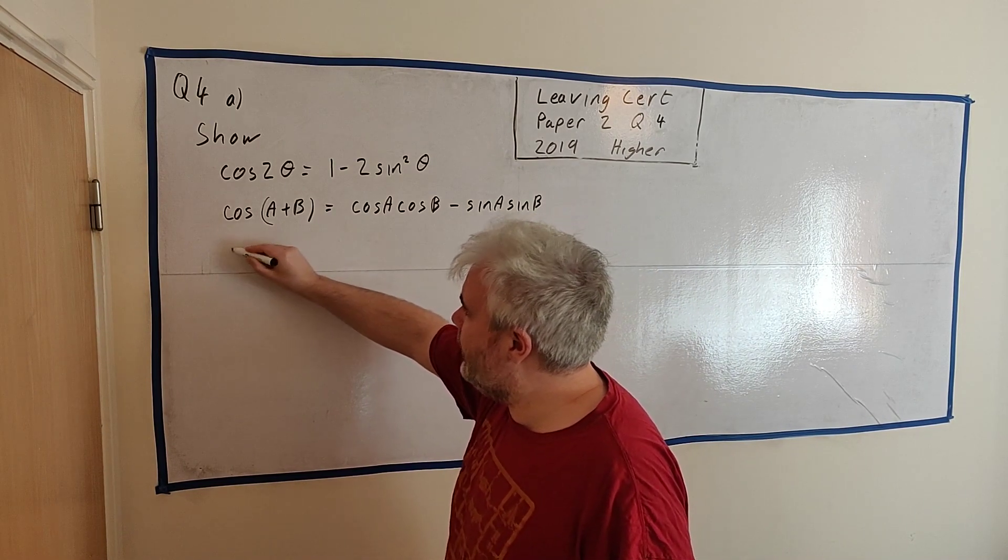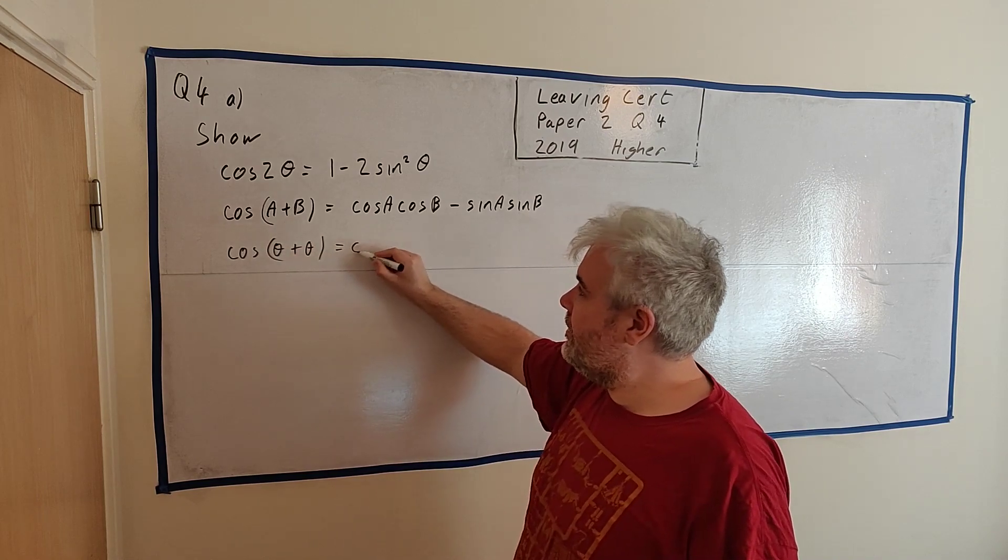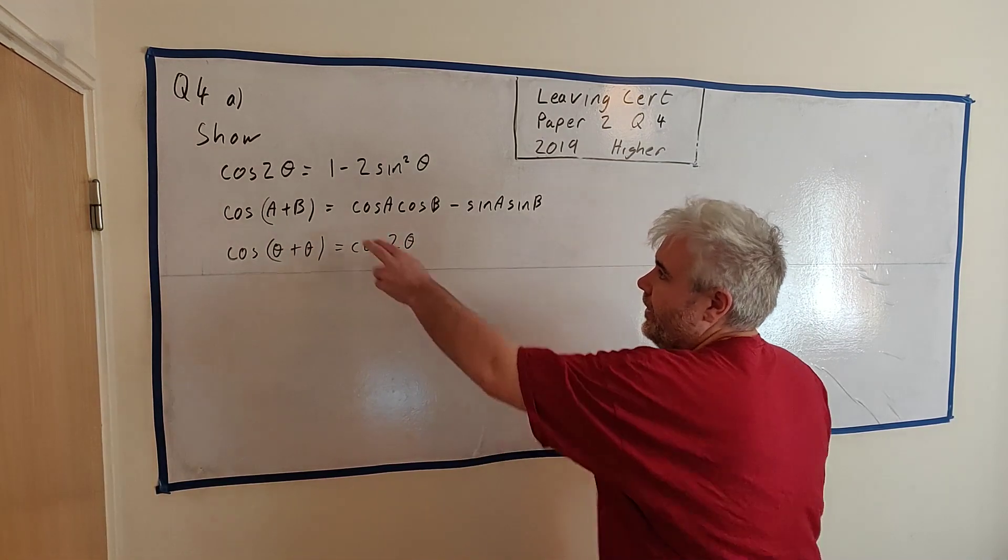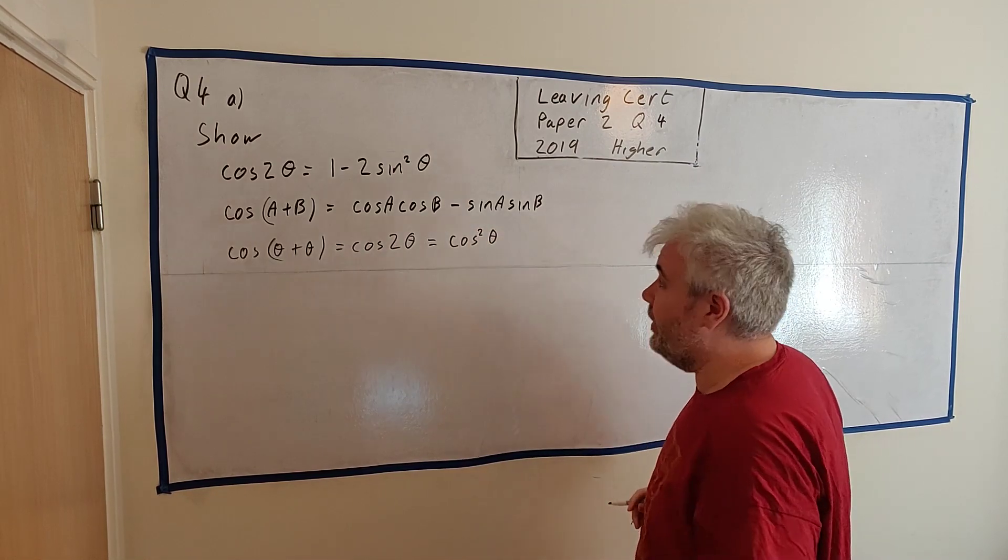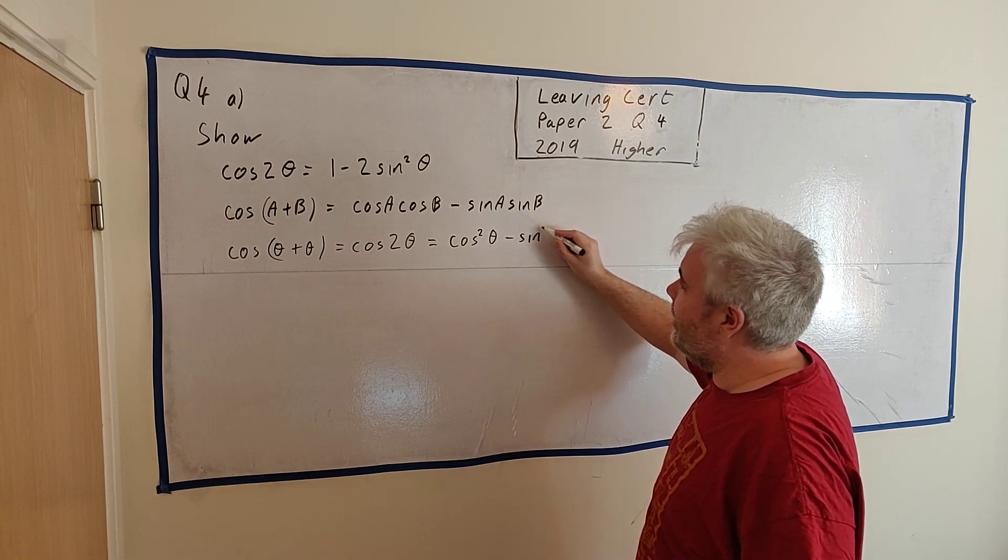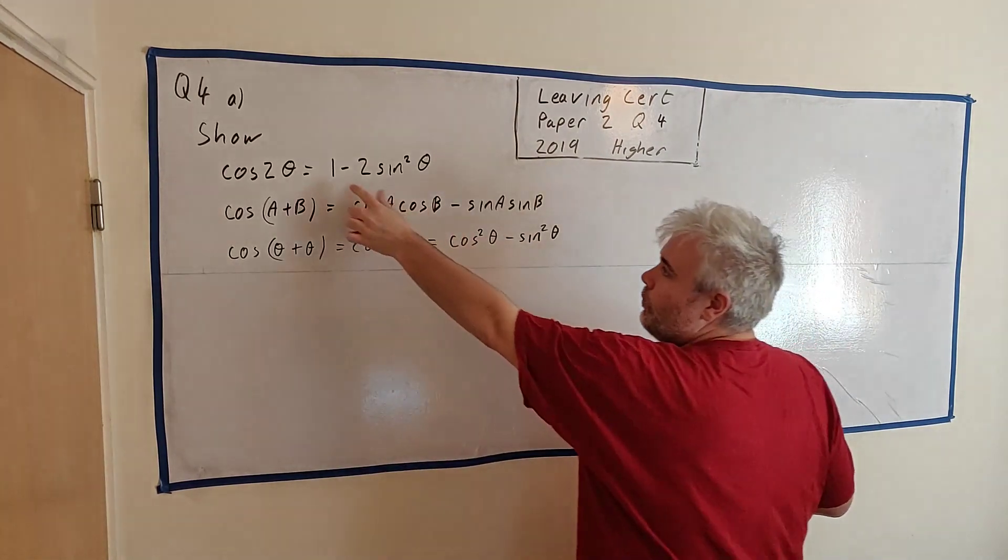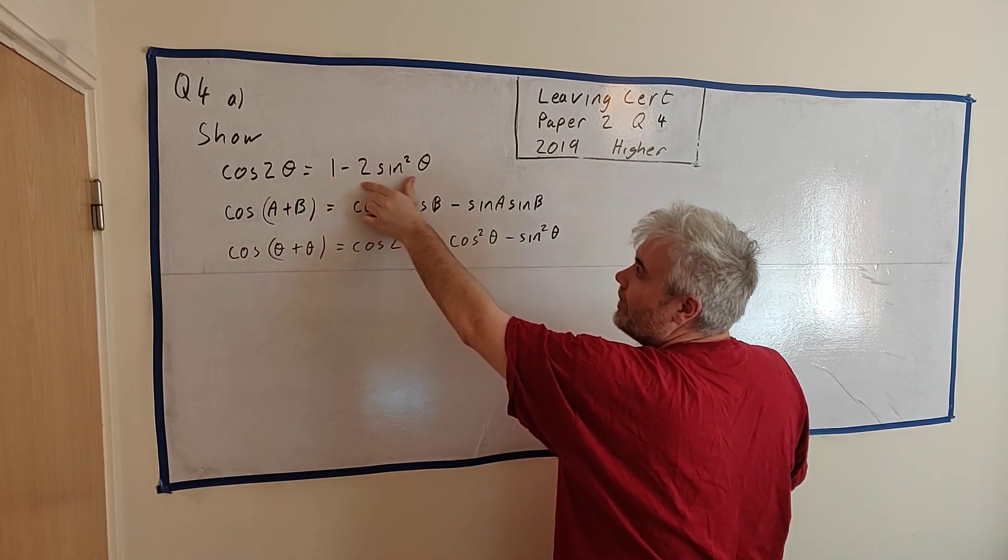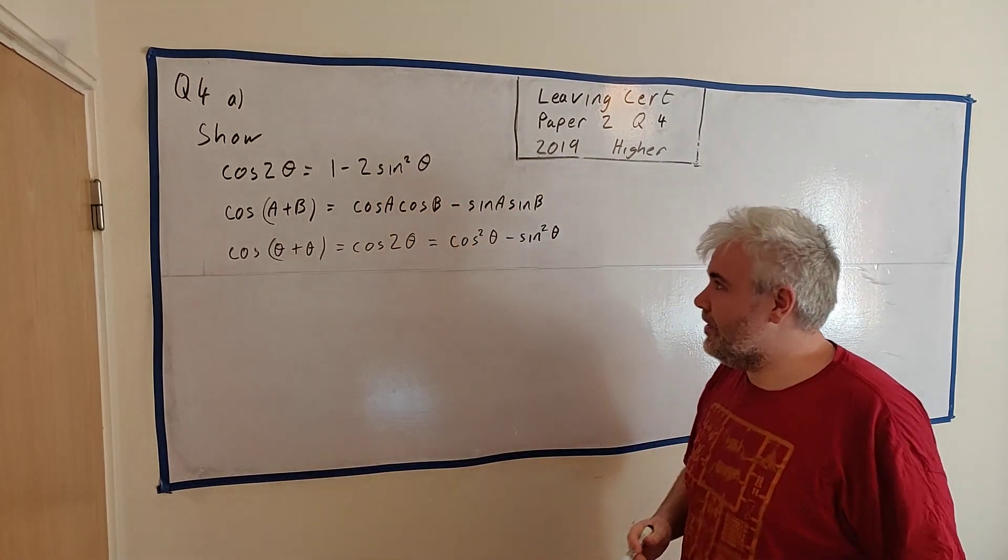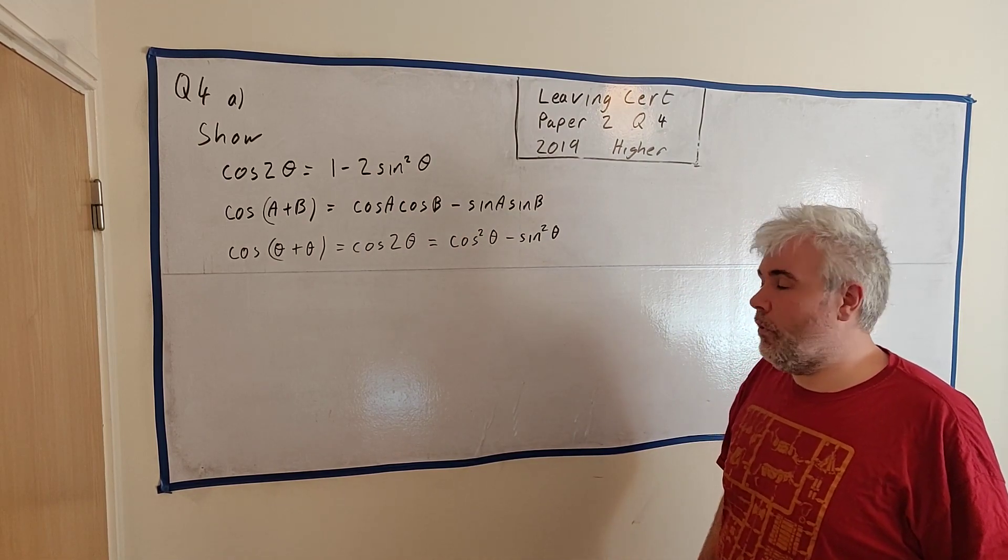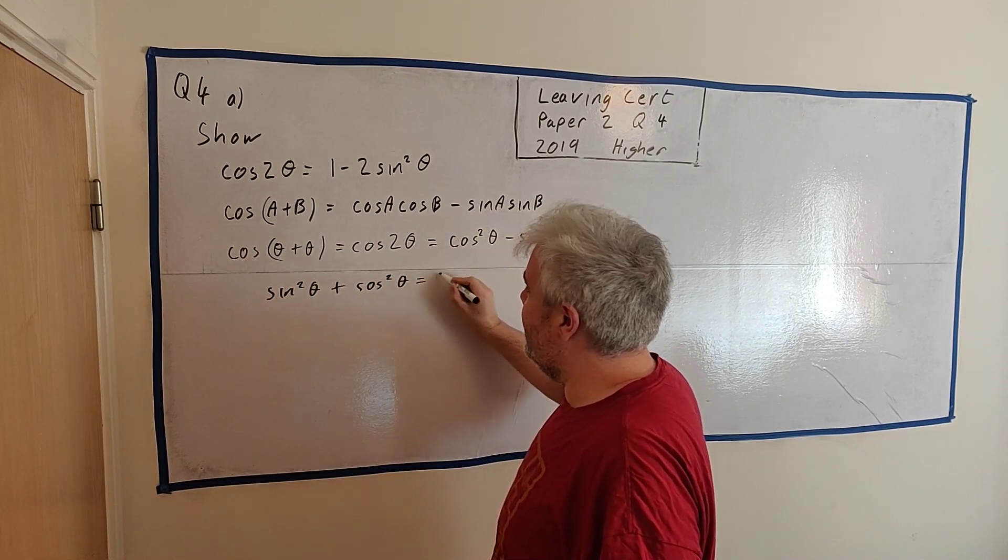We'll notice that cosine of A plus B, we have two theta here. So that is cosine of theta plus theta equals the cosine of 2 theta. I'll use that that's equal to cosine theta multiplied by cosine theta, which is cosine squared theta, minus sine theta multiplied by sine theta, which is sine squared theta. So I will use the fact that this now is equal to this. I would keep an eye out for the identity that sine squared theta plus cosine squared theta is equal to 1. Always be on the lookout for that.